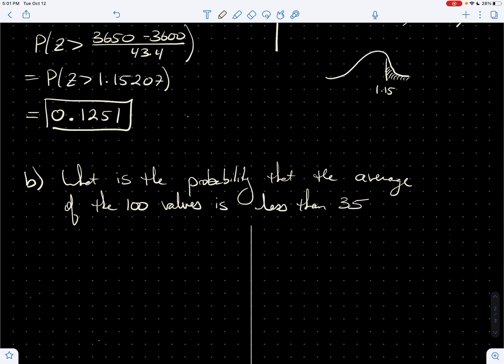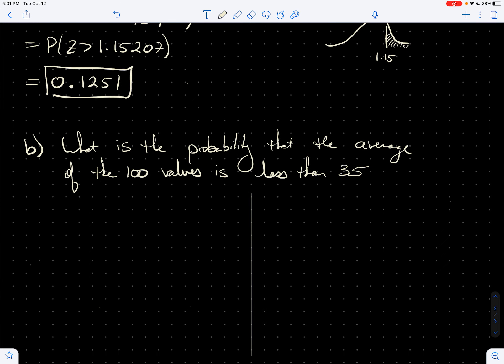Alright. So part B, I ask us, what's the probability that the average of the 100 values is less than 35? We'll add a question mark there. And so we need to realize that like the sum, the average is also,